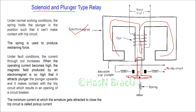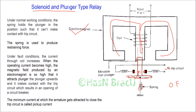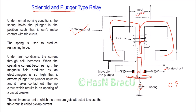This plunger must be moved upwards to make contact with the trip circuit. You can see a spring which provides the restraining force. Restraining force is the force of the spring which is opposite to the operating force. When supply is given, current flows through the coil, the coil is energized, magnetic flux is produced, and this magnetic flux flows through a closed path.